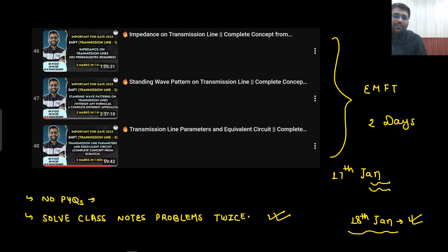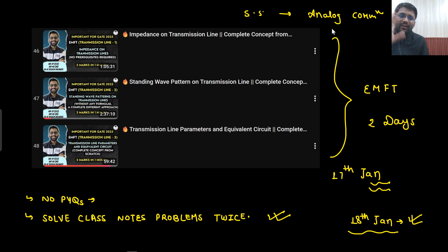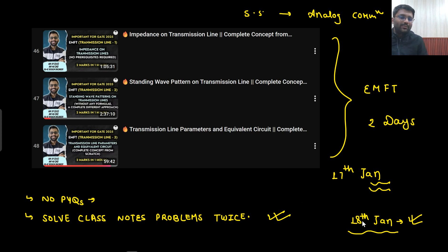If you guys are following till 17th January and want to cover more, you can cover analog communication as well. If you are comfortable with signal systems — specifically the first four chapters: basics of signals, basics of systems, Fourier series, and Fourier transform — then you can cover analog comm as well. All the content will be given for free. If you let me know by 17th January that you want to cover some portion of analog comm, I will make that particular video as well. But first, complete this particular task.